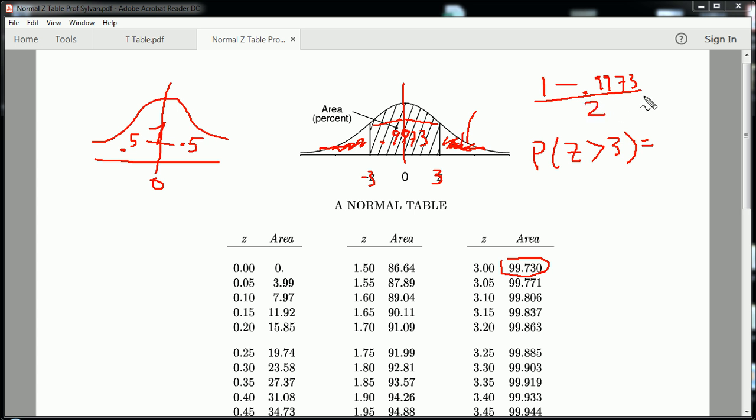Again, because of symmetry, that would be the probability of Z being greater than 3. And by the way, that would also be the probability of Z being less than negative 3, which is this probability.